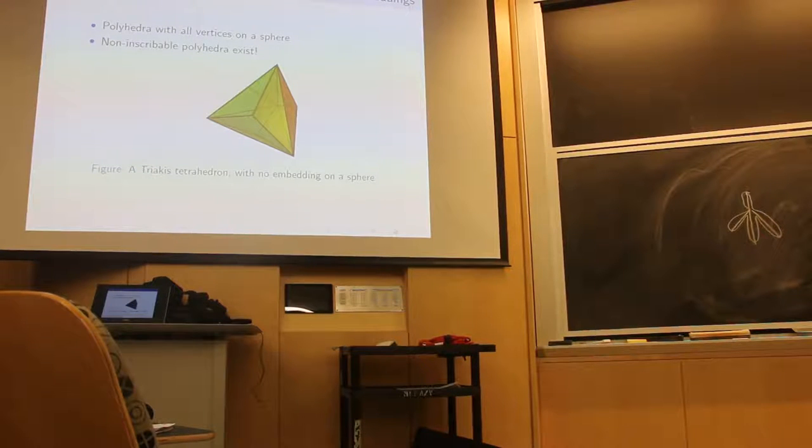Surprisingly, some of these polyhedra were simplicial, again meaning that all faces were triangular, which was very surprising because simplicial polyhedra have a great degree of freedom. His example was the triakis tetrahedron here, which can be created by taking a tetrahedron and extending triangular pyramids off of the faces.